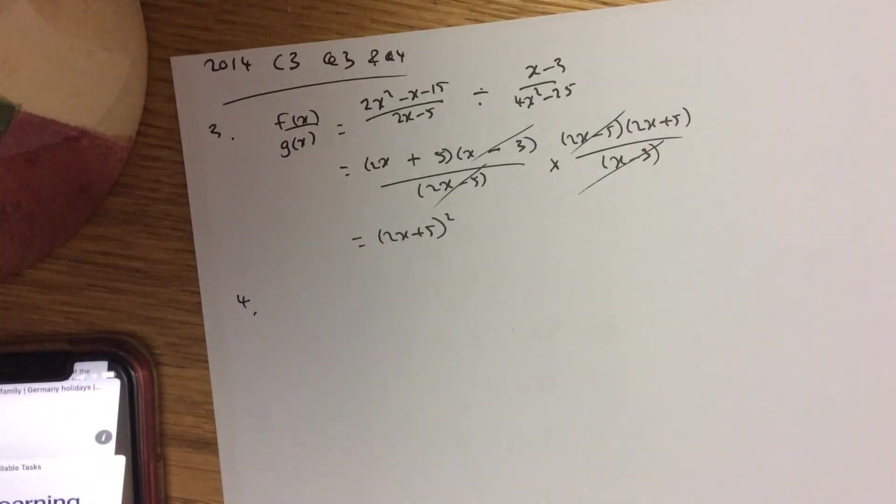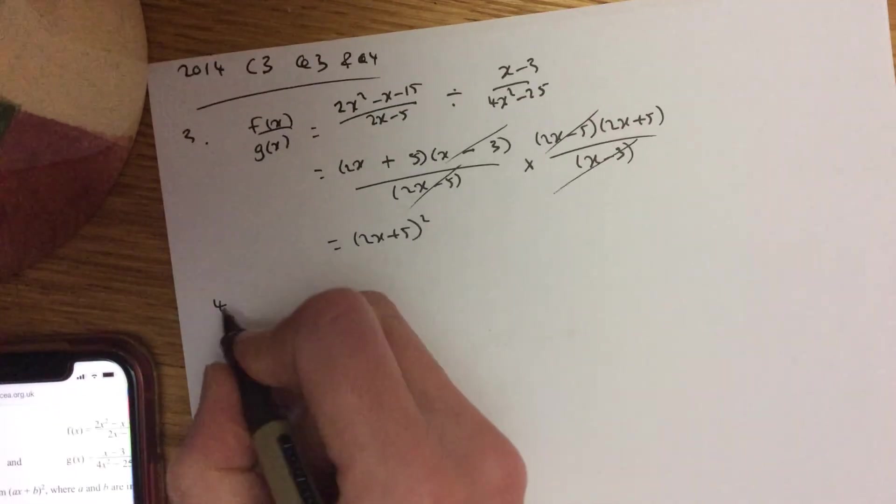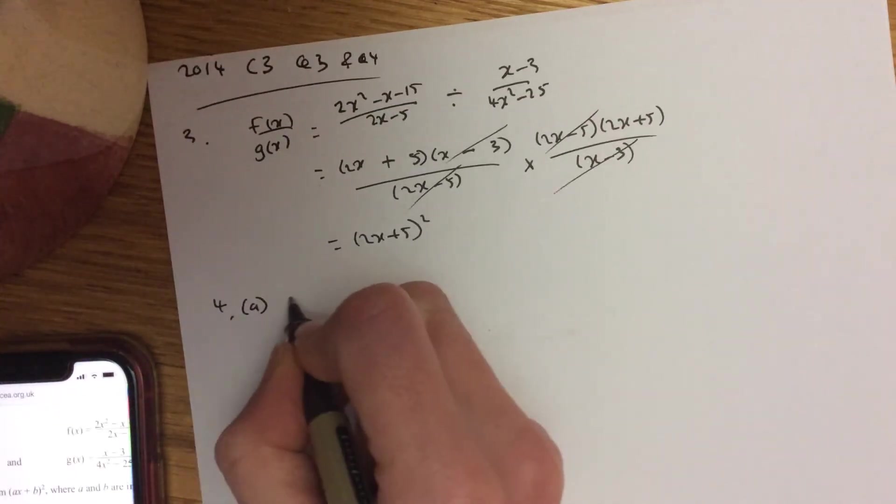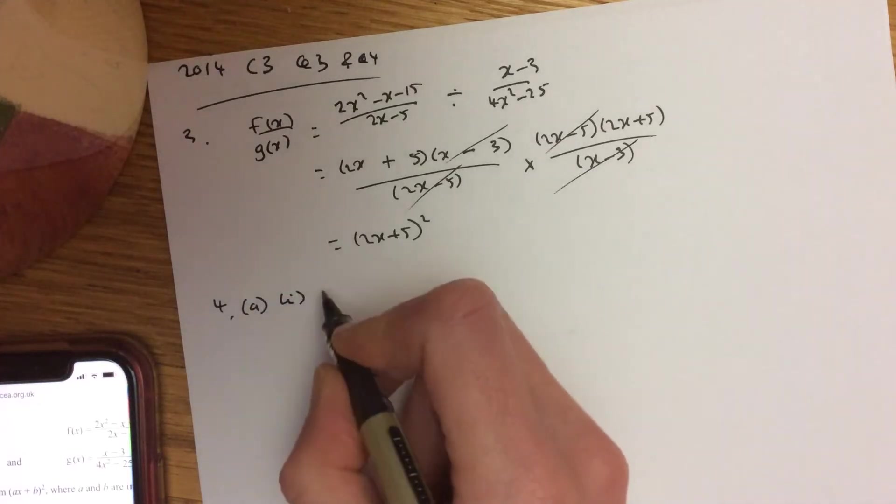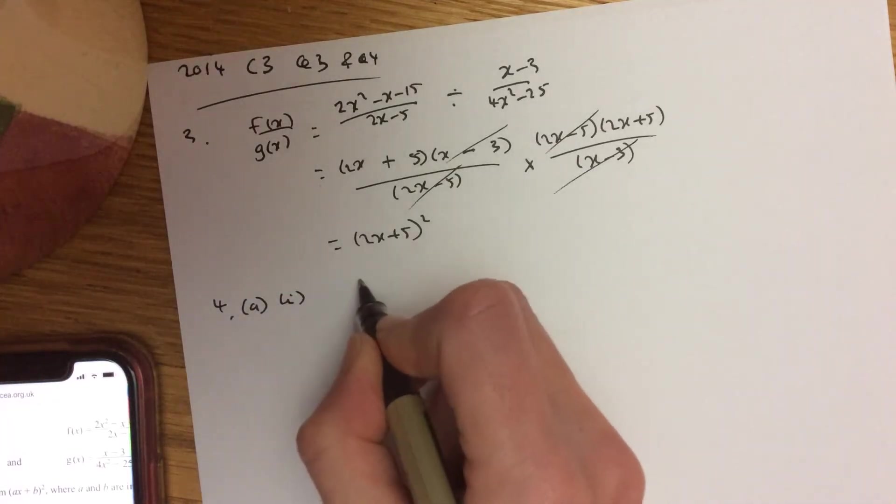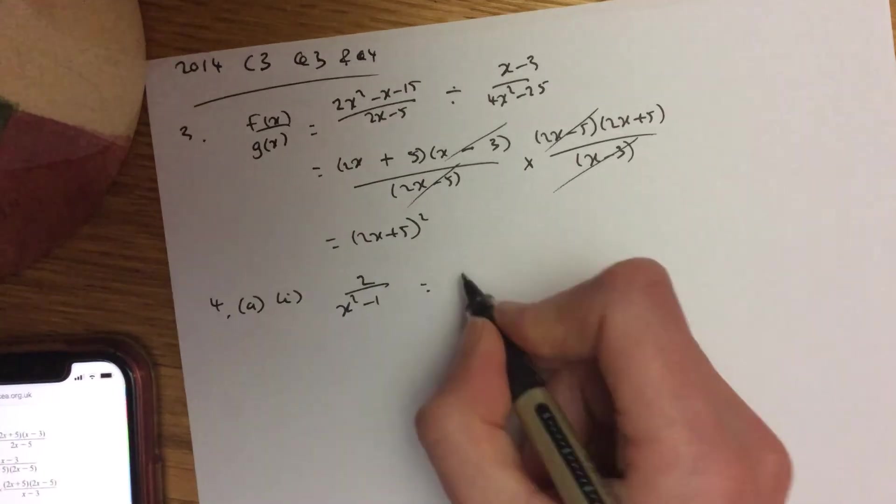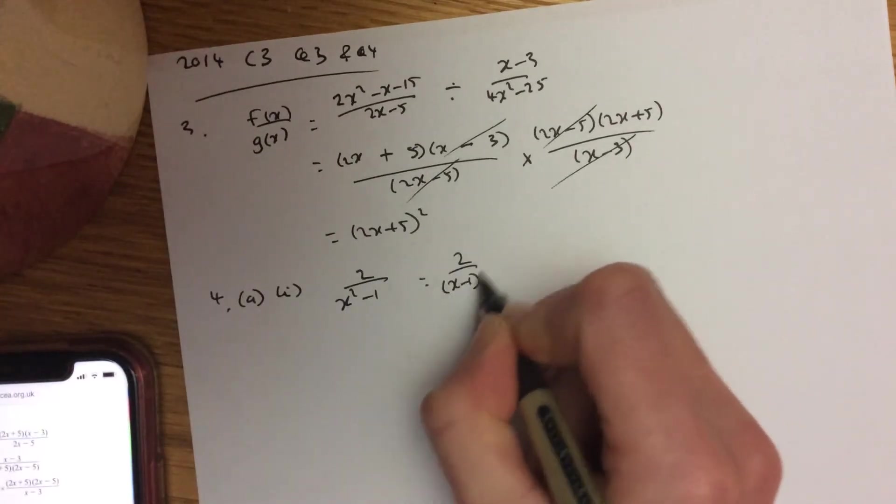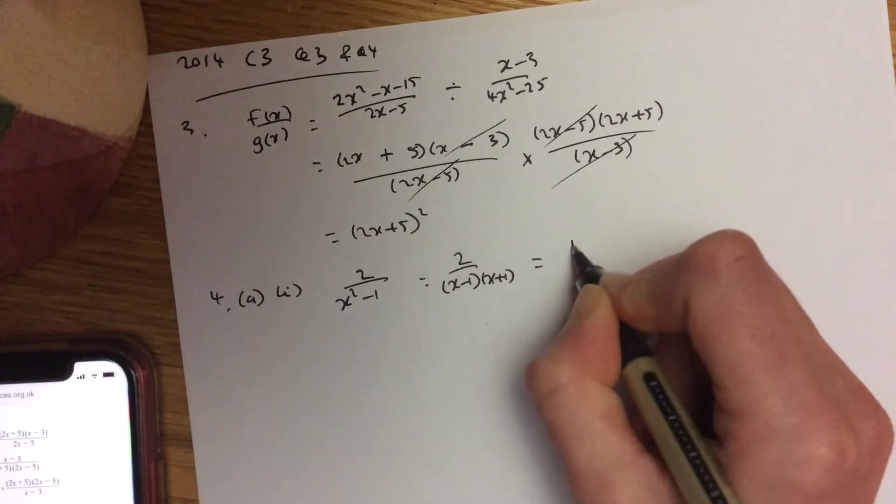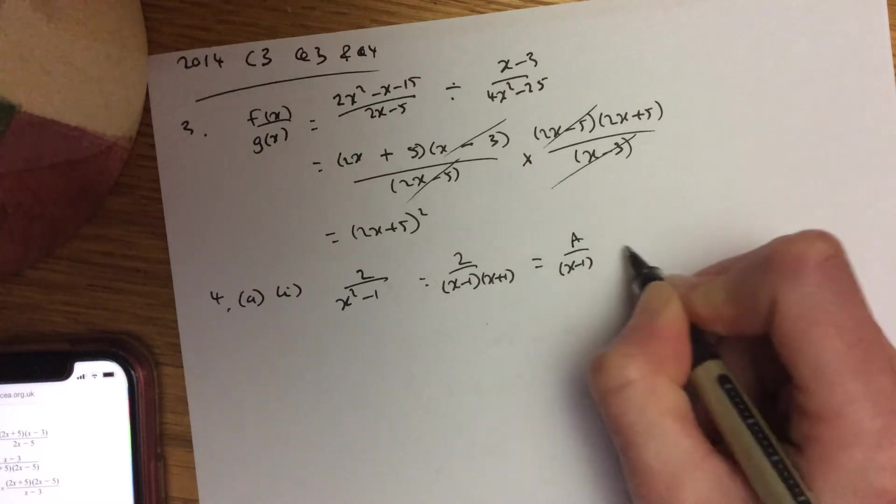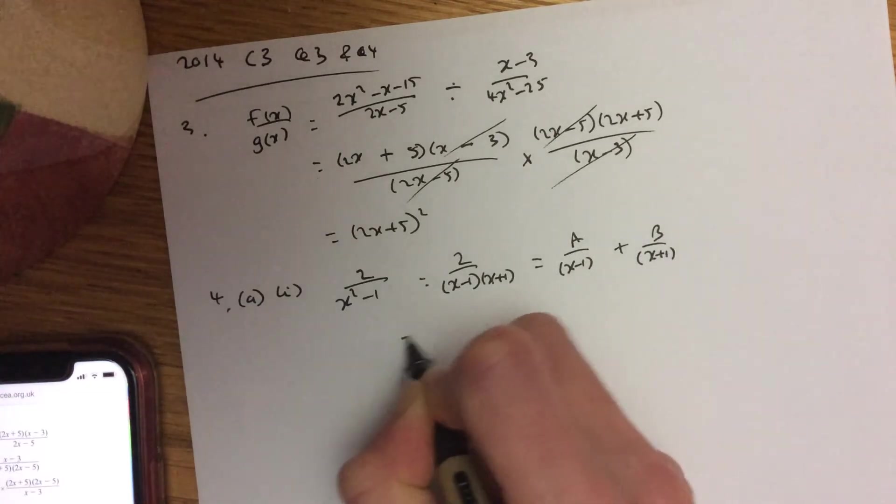Question 4 from the same paper is express it in terms of partial fractions. So 4 part 1. And you have 2 over x squared minus 1. So with partial fractions, you always want to factorise first. So that's a difference of two squares. So it's x minus 1, x plus 1. Then split it up: a over x minus 1 plus b over x plus 1.